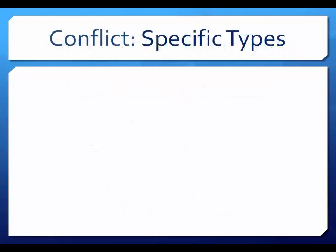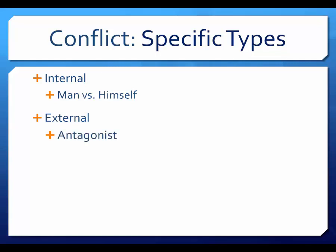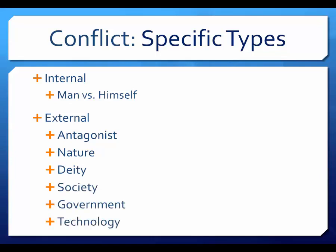The two broad categories of conflict are internal or external. Internal conflict involves a character struggling within himself, trying to overcome a character flaw or reach a difficult decision. External conflicts are more common, as they will pit the protagonist against another person, nature, God, society, or some entity larger than himself. Conflicts may be physical, emotional, ethical, political, ideological, or any combination of obstacles a character must overcome in pursuit of their goals.